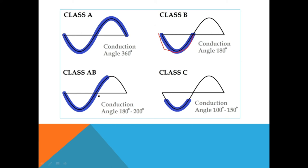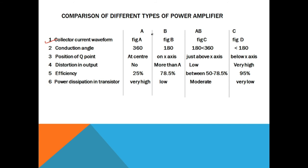In case of class AB power amplifier, the Q-point is adjusted just above the X-axis, and therefore the conduction angle is more than 180 degrees but less than 360 degrees. In case of class C power amplifier, the Q-point is adjusted just below the X-axis, so the conduction angle is less than 180 degrees. So: conduction angle for class A is 360°, for class B it is 180°, for class AB it is greater than 180° but less than 360°, and for class C it is less than 180°.